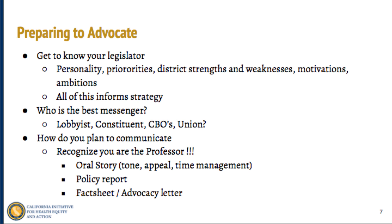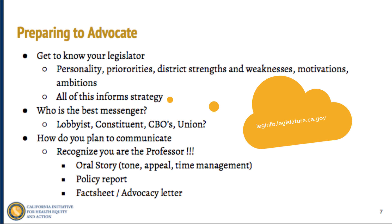That also goes into choosing the best messenger. Sometimes it's a lobbyist, sometimes a constituent, sometimes a union — it depends on your legislator. You can look into who sponsors most of the legislator's bill package on leginfo.ca.gov. Maybe they have close relationships with SEIU or Western Center Law and Poverty. If you're advocating for education reform, maybe the best messenger is a student. These are different strategies for choosing the right messenger for a given office visit.